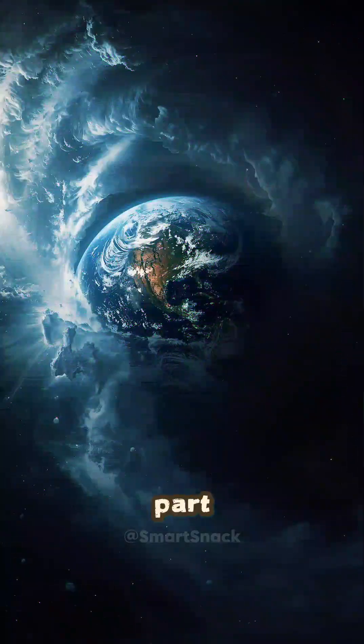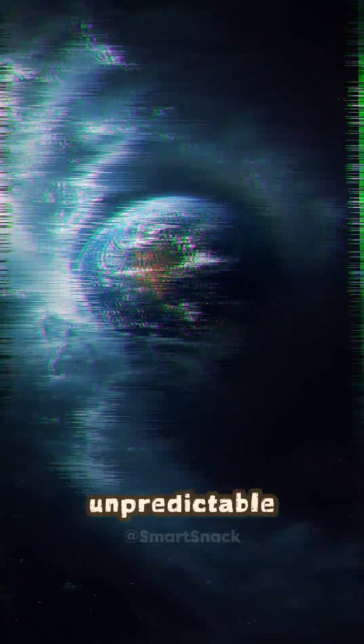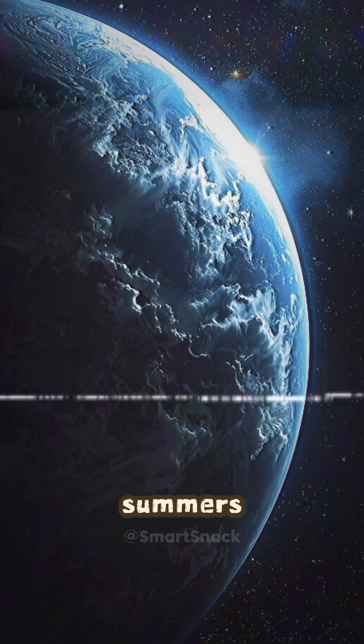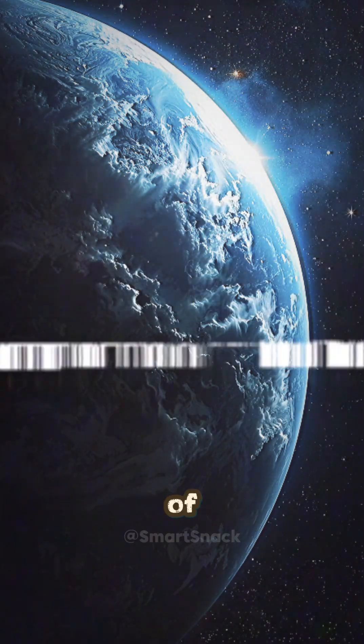But the worst part, Earth begins to wobble. The moon stabilizes our tilt. Without it, seasons grow unpredictable. Winters become harsher, summers more extreme, and climate patterns start spiraling out of control.